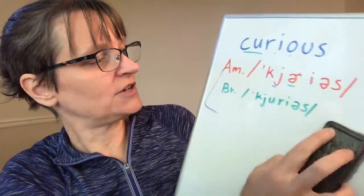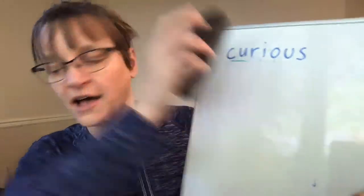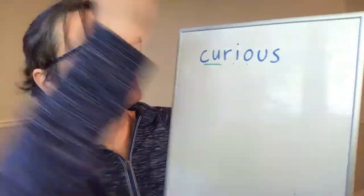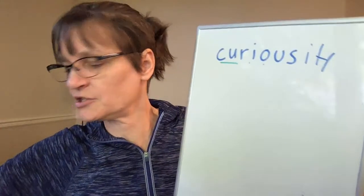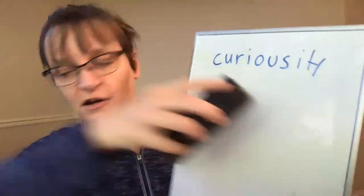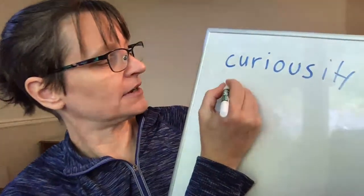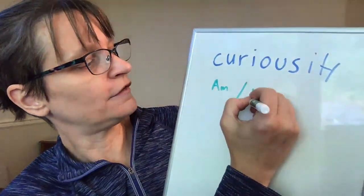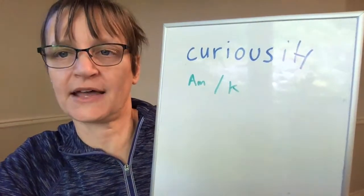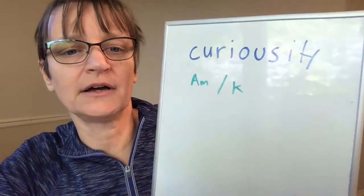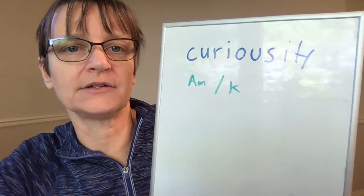When we change to 'curiosity,' we have quite a bit of a change in American English. Our syllable stress changes — we no longer have first syllable stress and our vowels change. So in 'curiosity' in American English, we go to more of the 'ooh' sound with 'curiosity' rather than just the 'er' sound like we had in 'curious.'